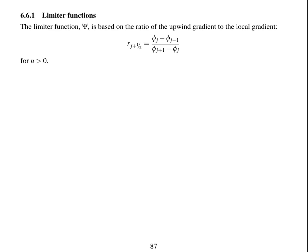What should the limiter function Ψ be? In order to define the limiter function, we're going to define r, which is the ratio of the upwind gradient to the local gradient of phi. This is for velocity u greater than 0.